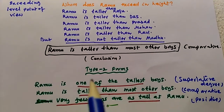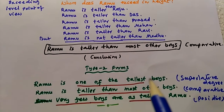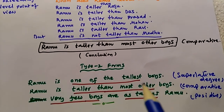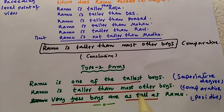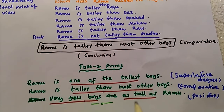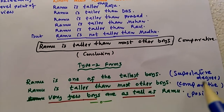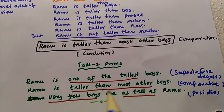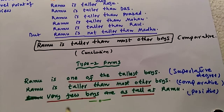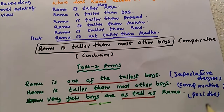Summarizing the three type 2 structures of degrees of comparison: 'Ramu is one of the tallest boys' is the superlative degree; 'Ramu is taller than most other boys' is the comparative degree; and 'very few boys are as tall as Ramu' is the positive degree.